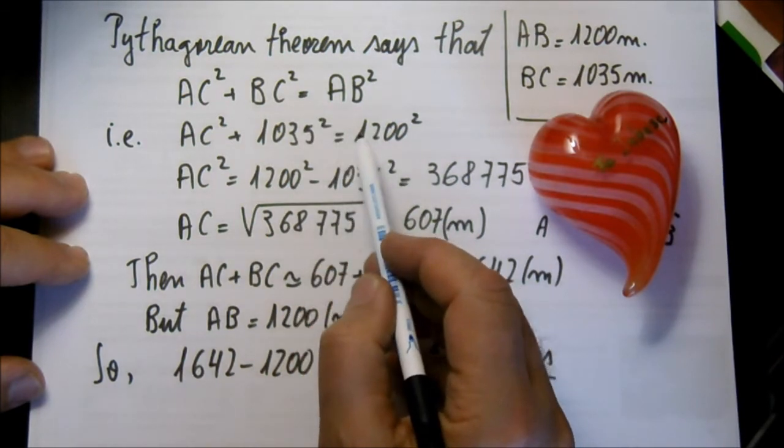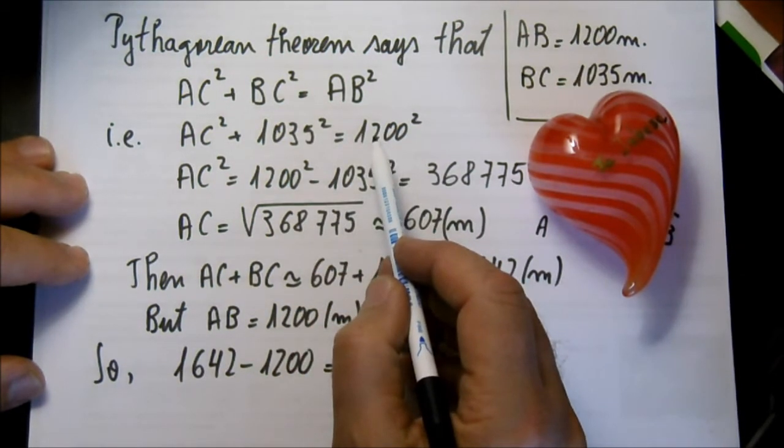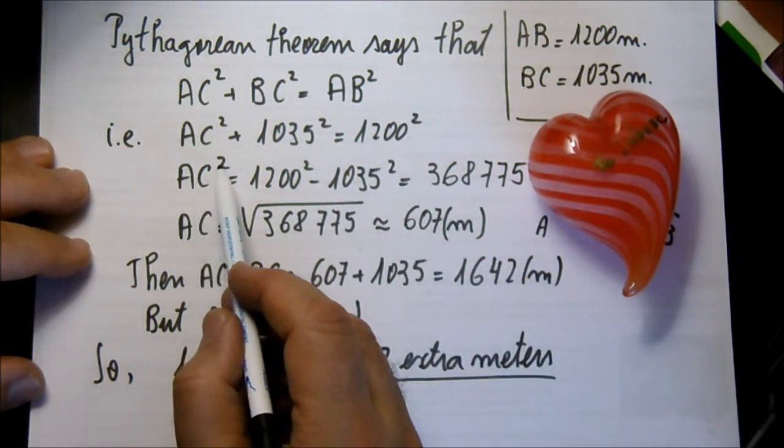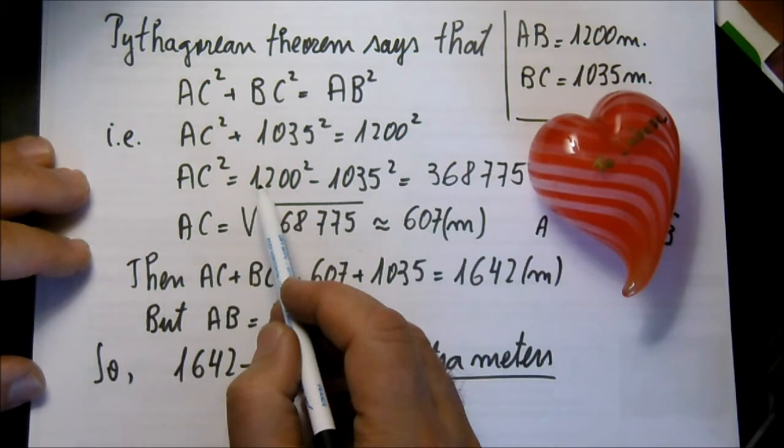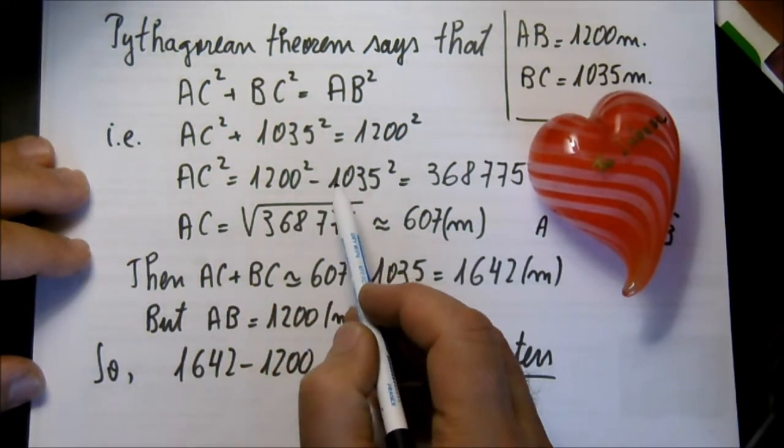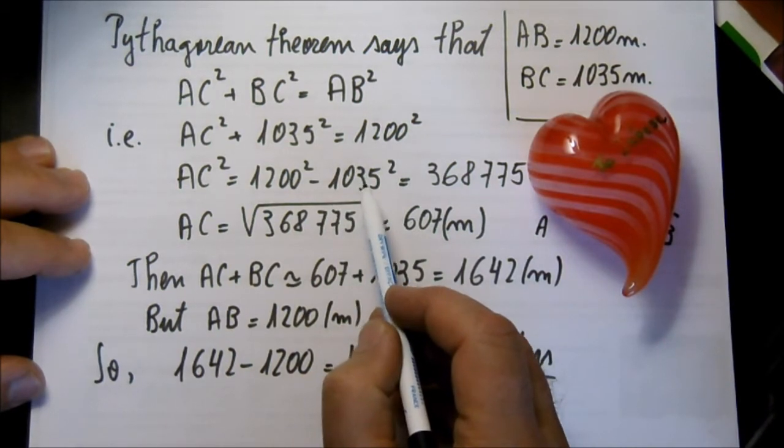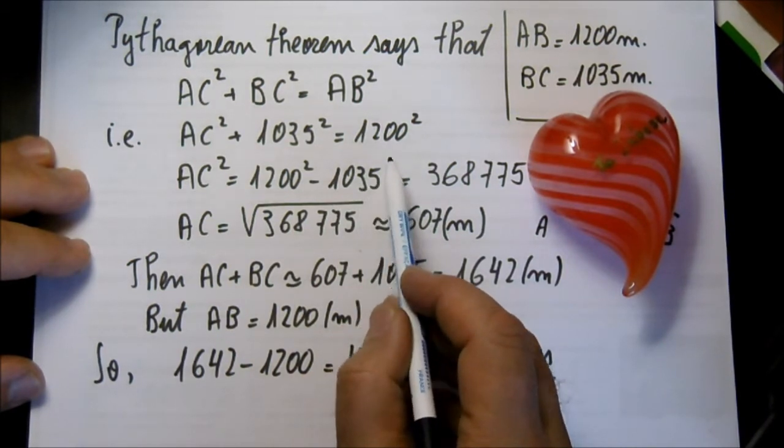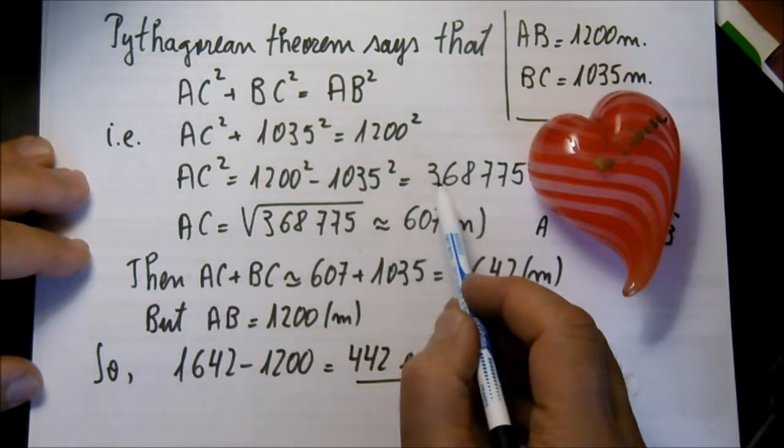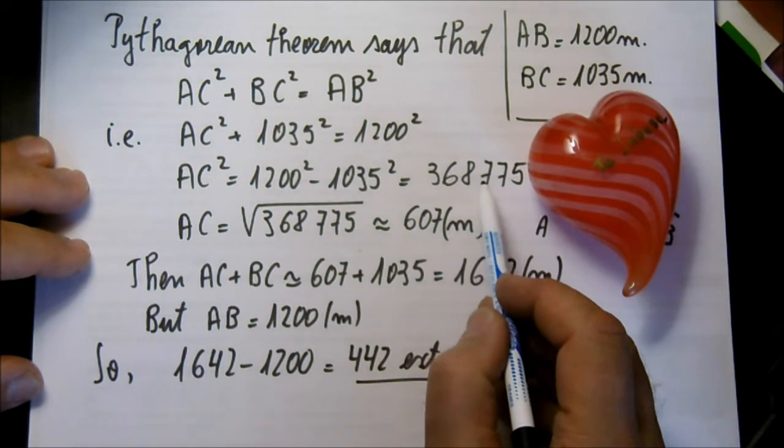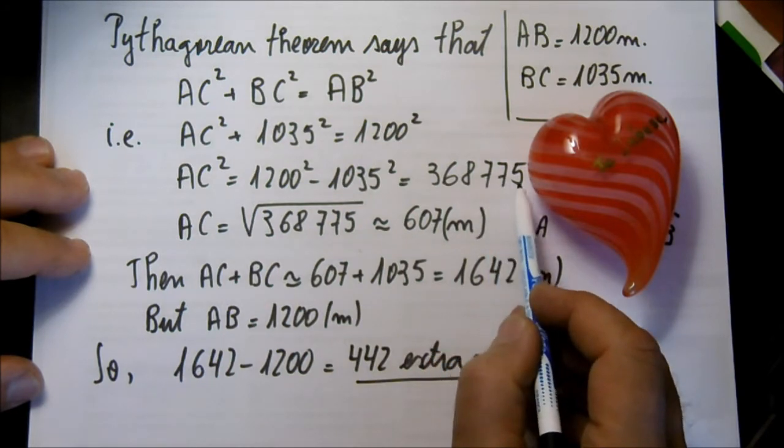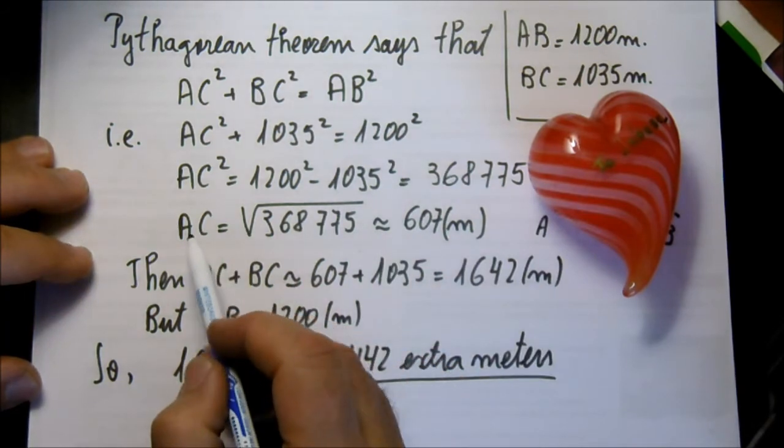equals 1,200 squared. Thus, AC squared equals 1,200 squared minus 1,035 squared equals 368,775.